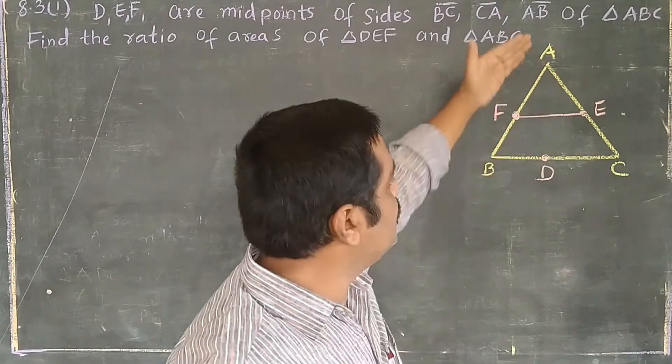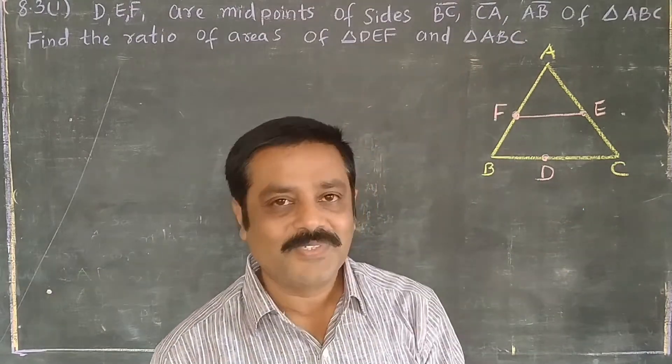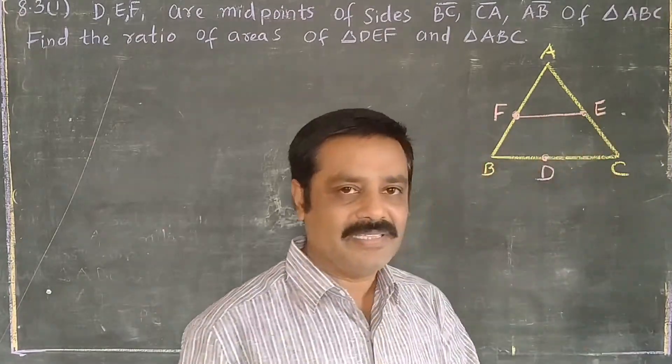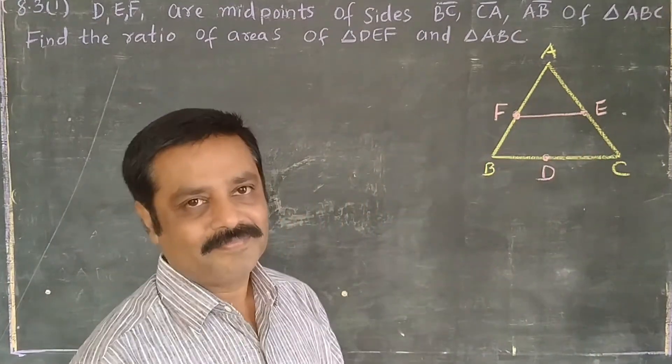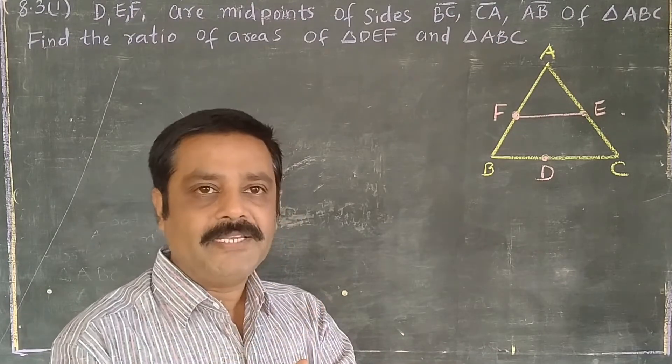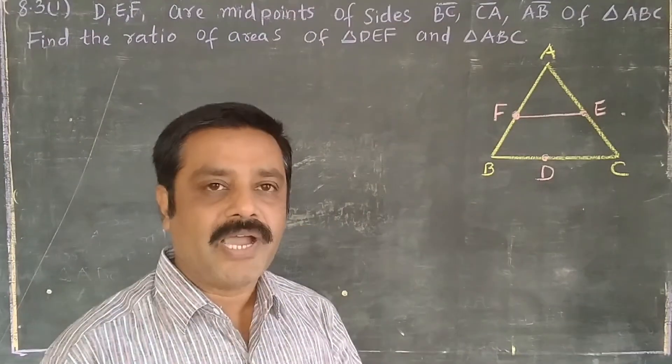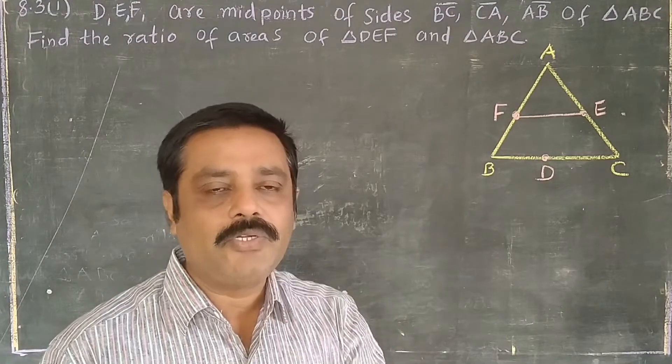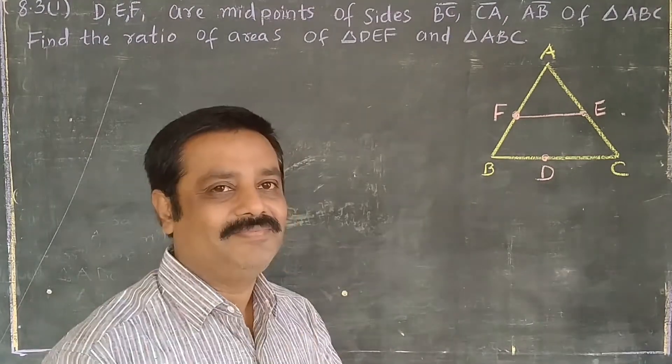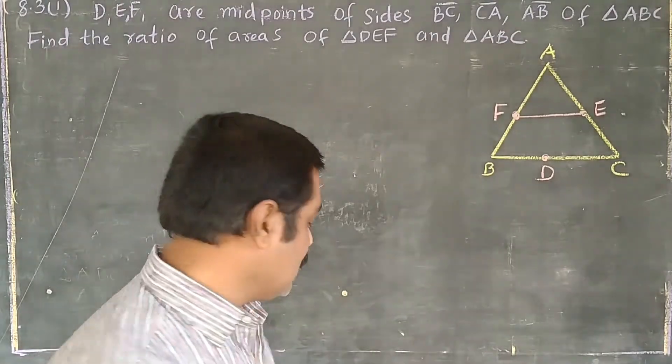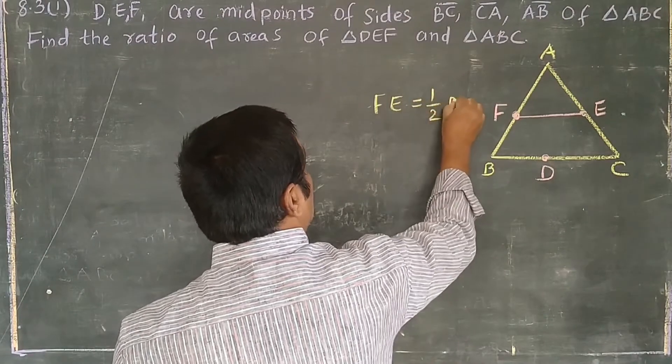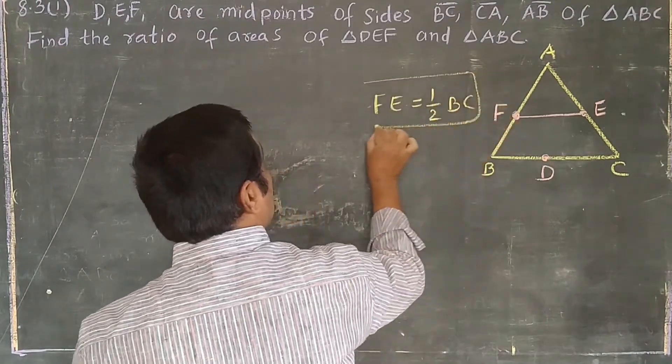AF by FB is equal to 1 and AE by EC is equal to also 1 because this is the midpoint. So AF by FB is equal to AE by EC. According to the converse of basic proportionality theorem, FE is parallel to BC. This we already know. FE is equal to half of BC. Already we learned in ninth class.